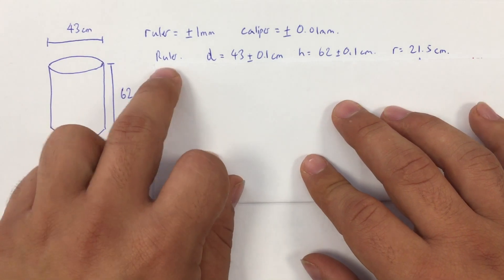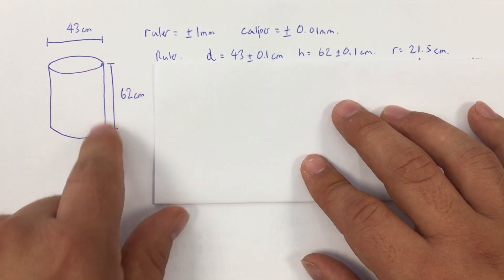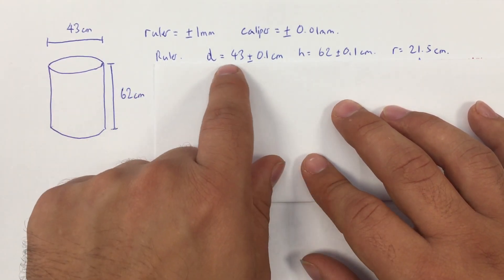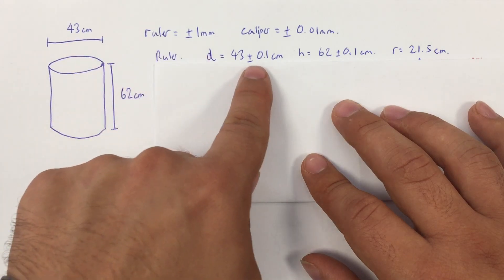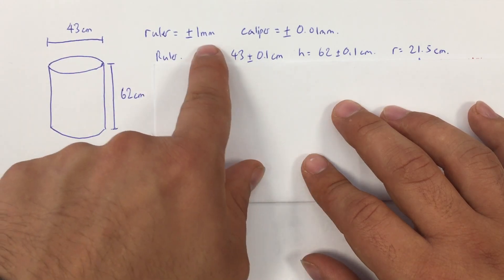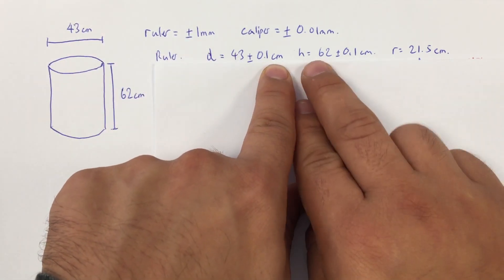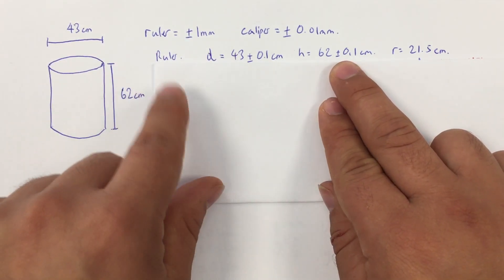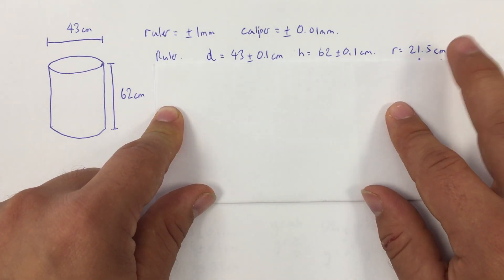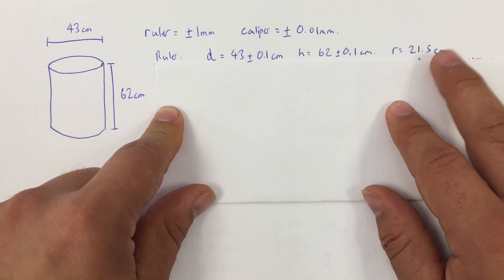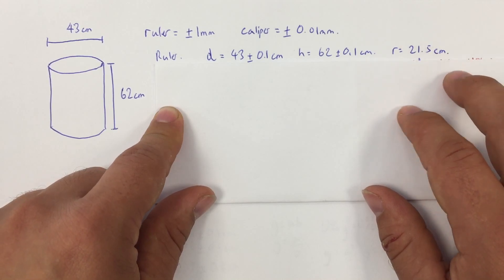Starting with the ruler, the information we have is: diameter is 43 centimetres plus or minus 0.1 centimetres — I've kept everything in centimetres. Height is 62 plus or minus 0.1 centimetres. And, as we'll need later, the radius is 21.5 centimetres.